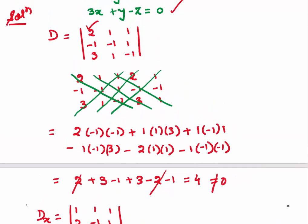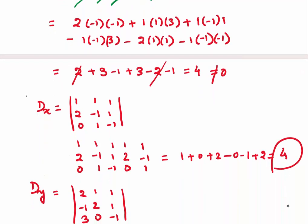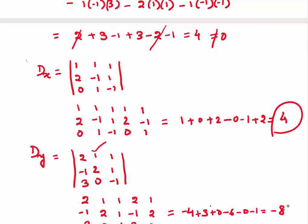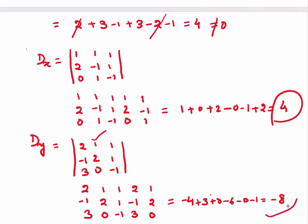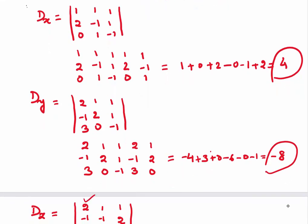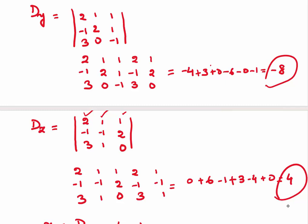Next we replace the coefficients of y. The coefficients of y — 1, minus 1, 1 — have been replaced by the right-hand side 1, 2, 0. Using Sarrus' method, dy comes out to be minus 8. For the third determinant dz, the first two columns remain the same and the third column has been replaced by the right-hand side 1, 2, 0. Using Sarrus' method, dz comes out to be 4.